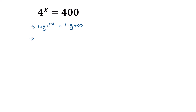We can write the left side as x times log of 4 is equal to the right side, log of 400. Now this x times log of 4 — we can write log of 4 as log of 2 squared.